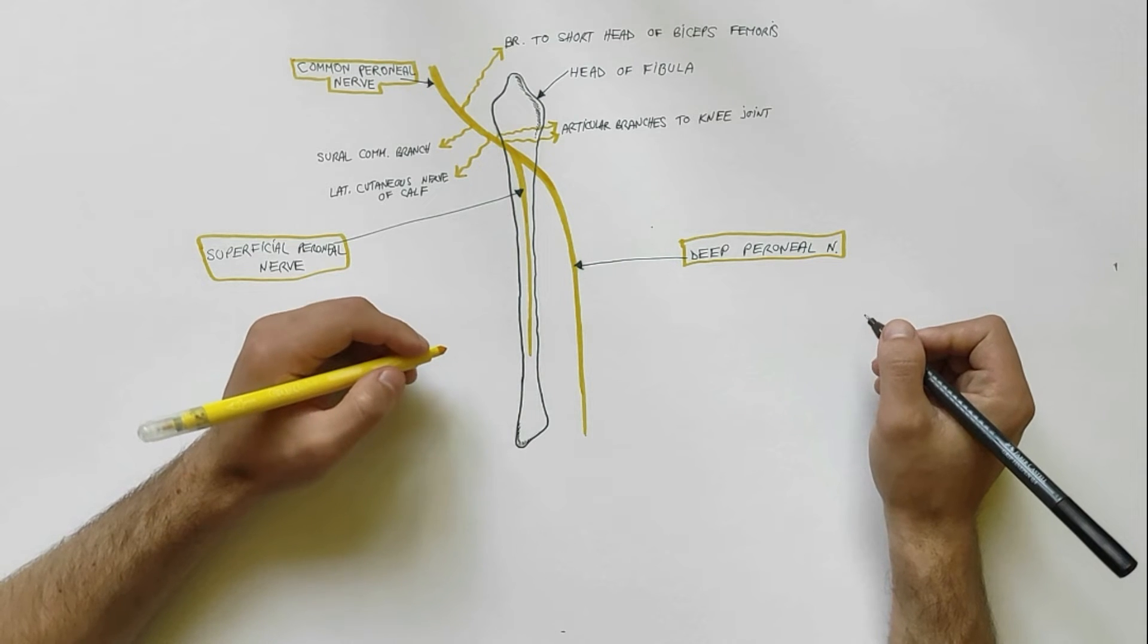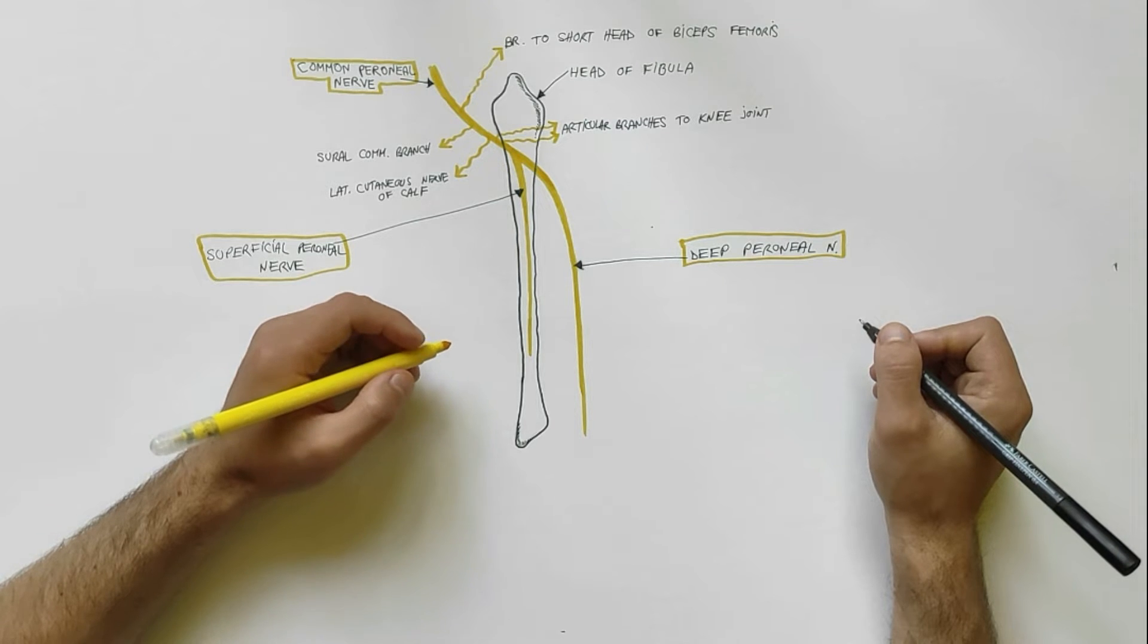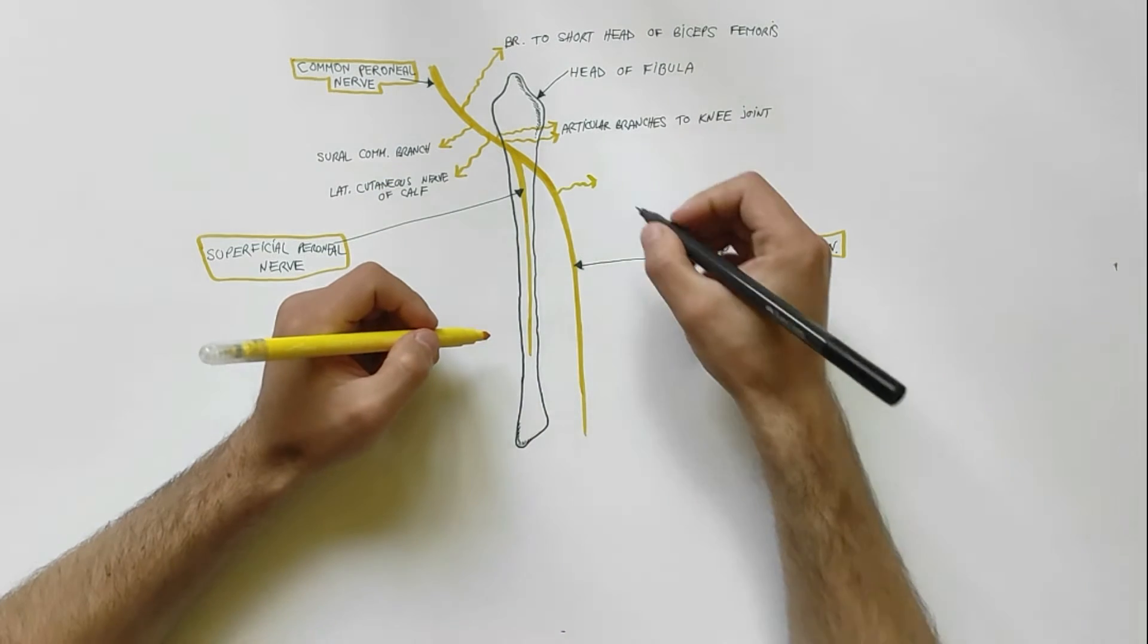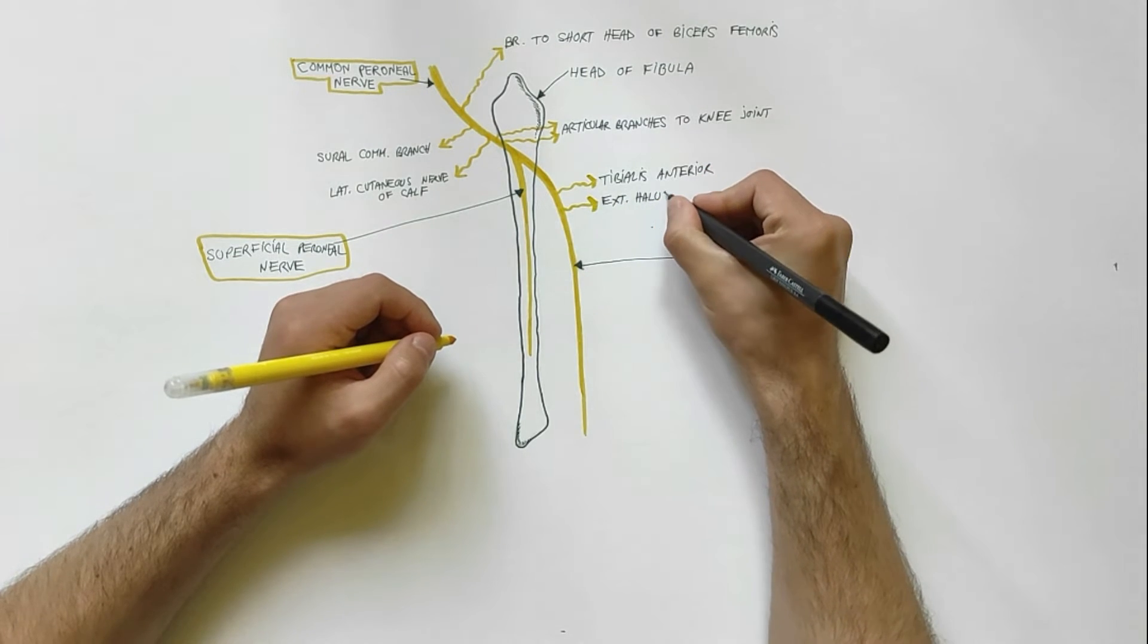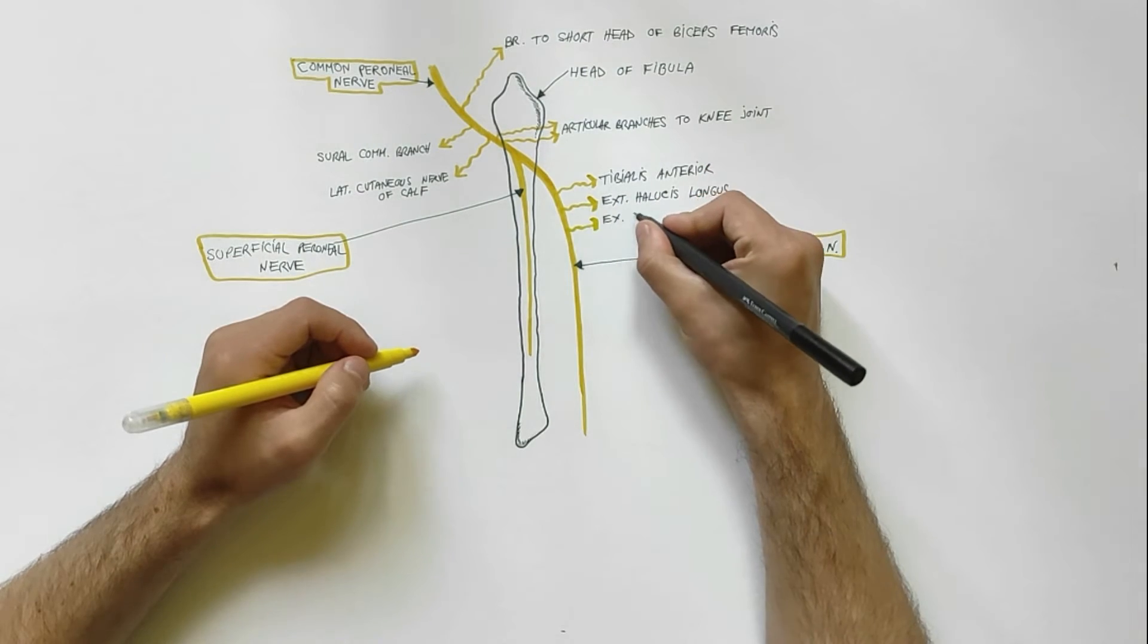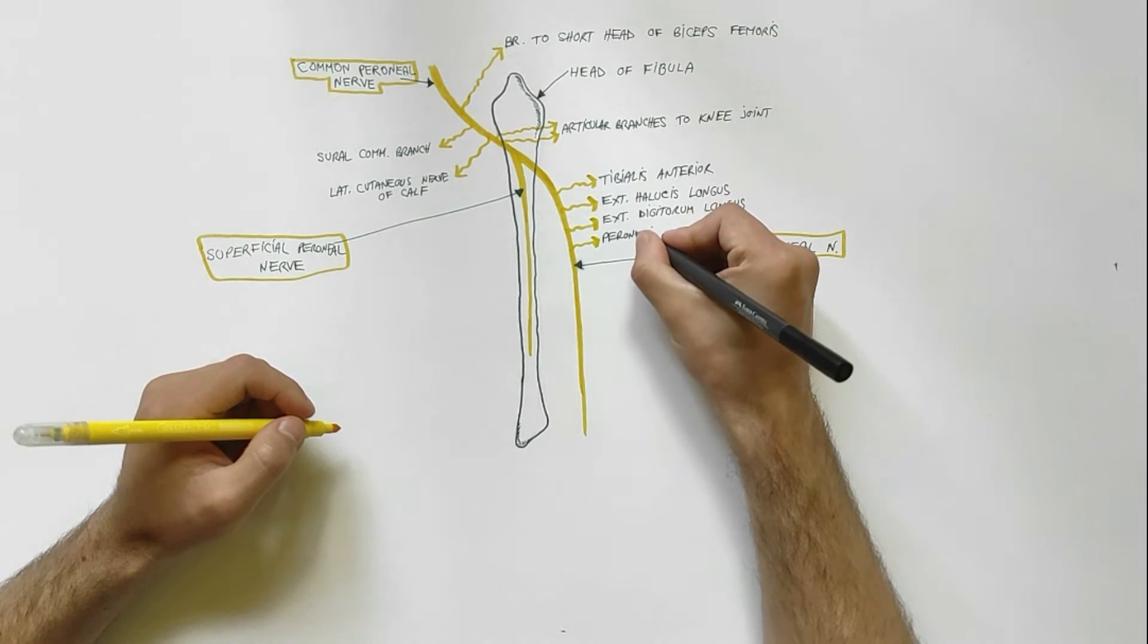The deep peroneal nerve is the nerve of the anterior compartment of the leg and the dorsum of the foot. In the anterior compartment of the leg, it gives off four branches to the four muscles present in this compartment: tibialis anterior, extensor hallucis longus, extensor digitorum longus, and peroneus tertius.